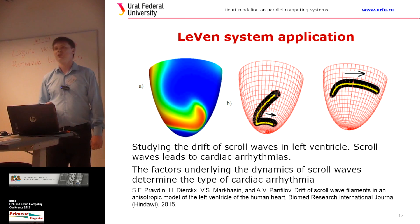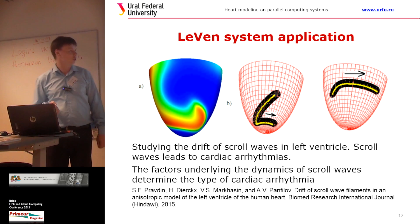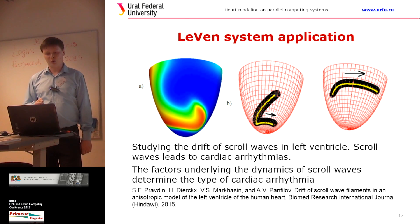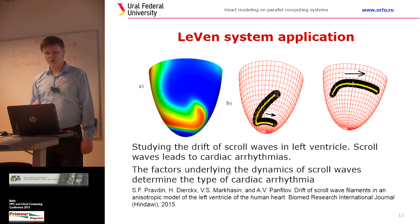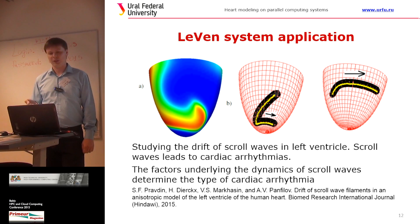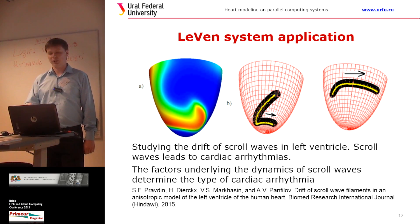Our system was used for different applications. One example is studying the drift of scroll waves in the left ventricle. Scroll waves lead to cardiac arrhythmia, which is a very common disease. We need to understand the factors and the dynamics of scroll waves to determine the type of cardiac arrhythmia.